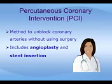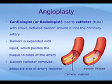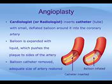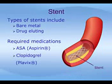Percutaneous coronary intervention, or PCI, is a method to unblock narrowed coronary arteries without performing surgery. It includes both angioplasty and stent procedures. During an angioplasty, a cardiologist or specialized radiologist inserts a catheter — a long, flexible tube with a small, deflated balloon around it — into a coronary artery. The balloon is placed in the narrowed area of the artery and is expanded with liquid, which pushes the plaque blockage to the sides of the artery, where it remains. The cardiologist then removes the balloon catheter and the normal size of the artery is restored.